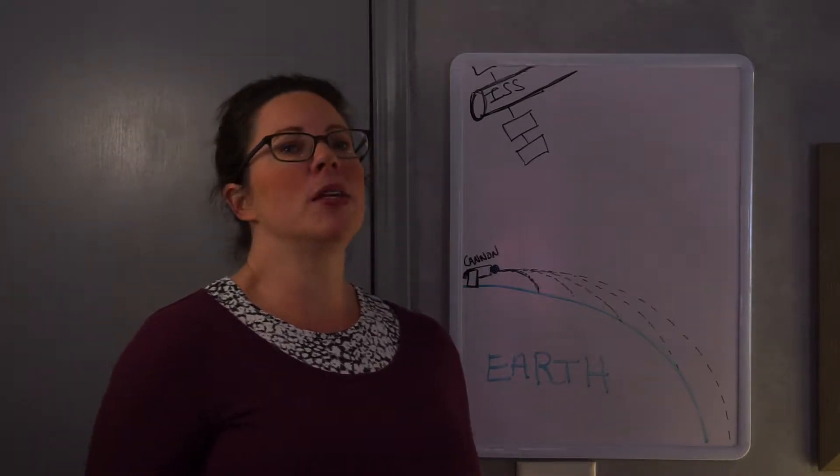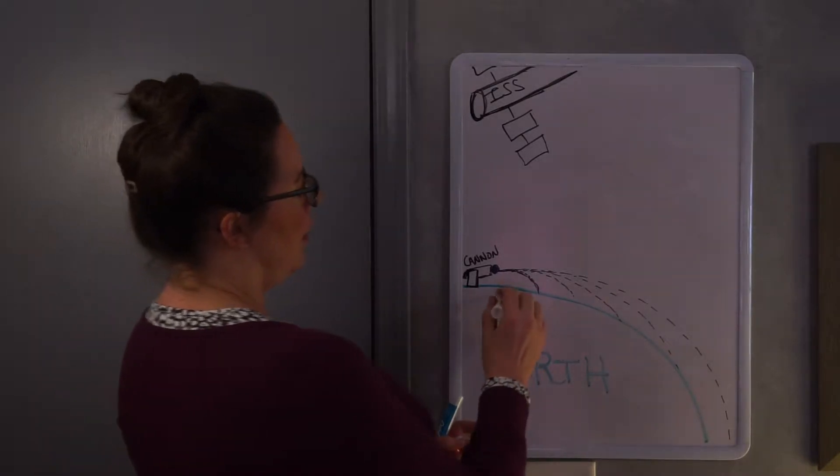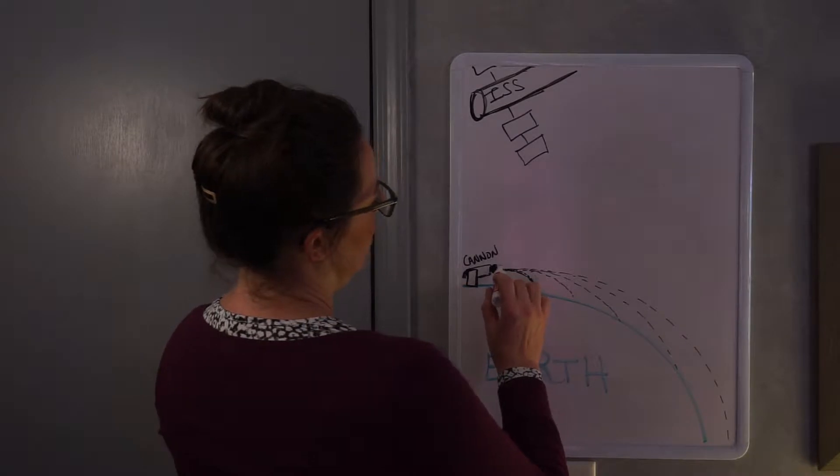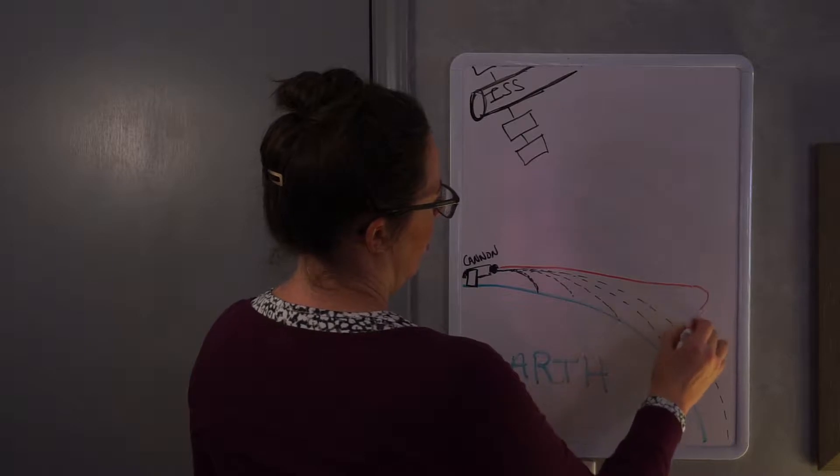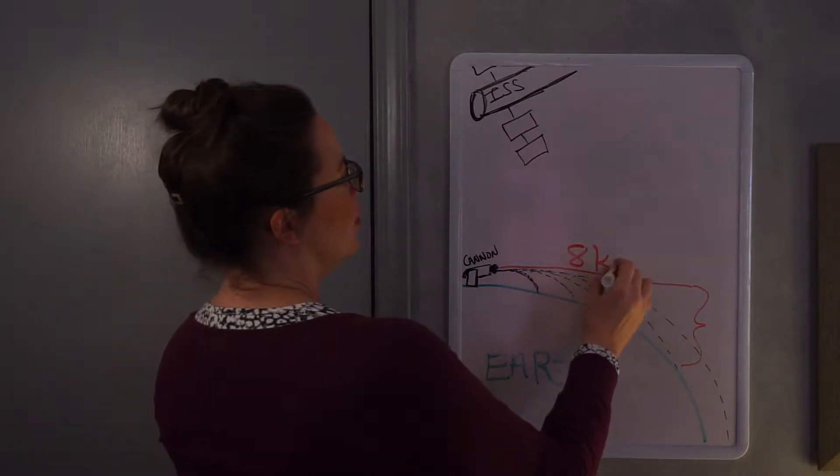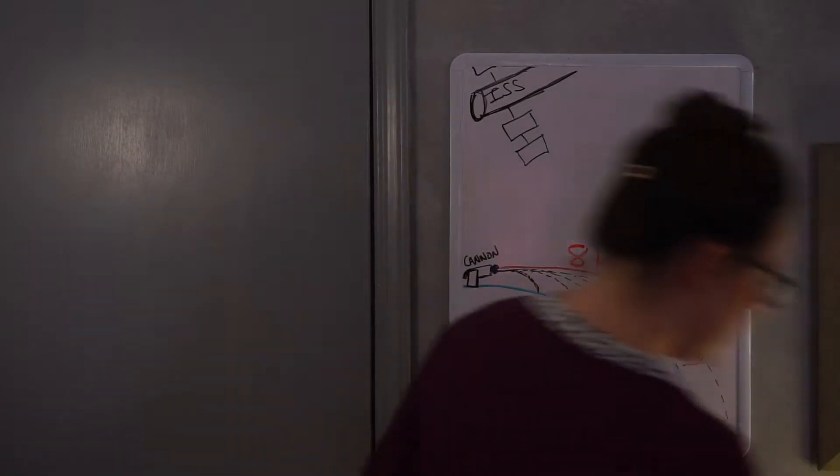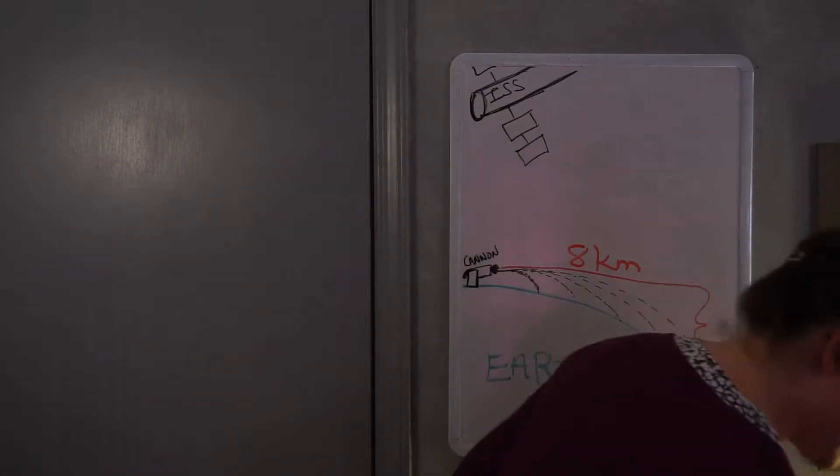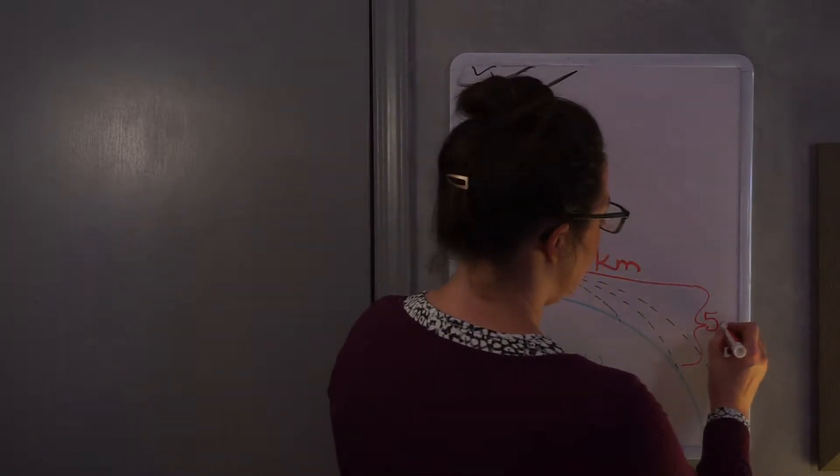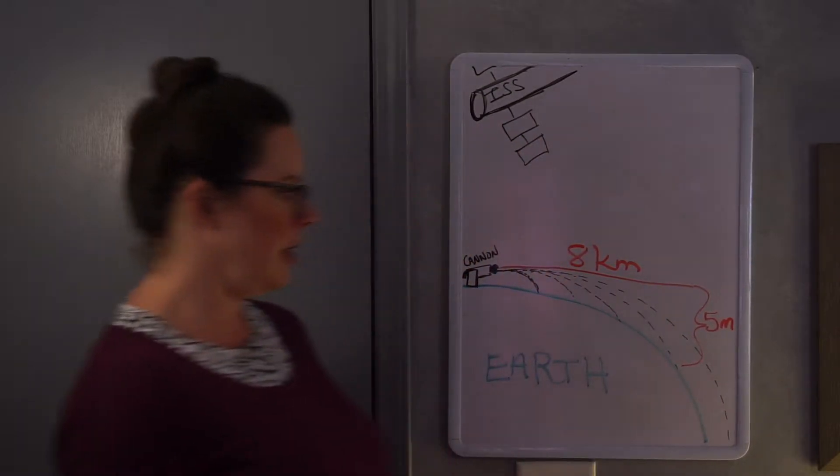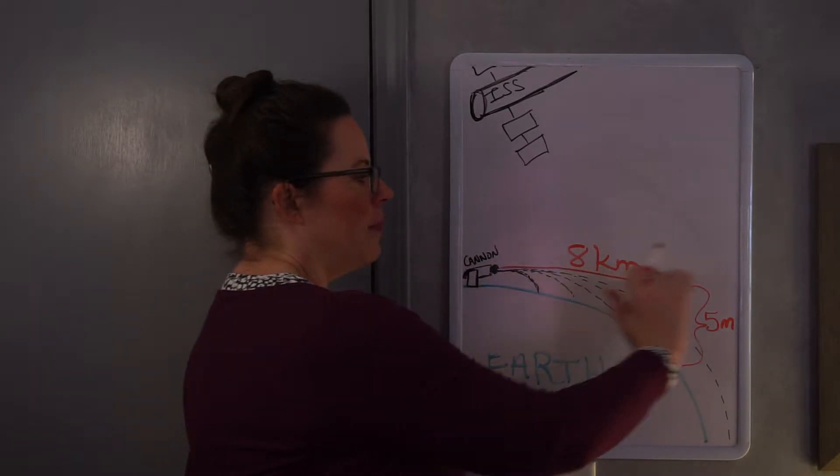Let's just say we shoot it a little bit further and a little bit further, and all of a sudden we start to see that the path that it takes matches the curvature of the earth. So that is what an object that's in orbit around a planet is doing. An object that's in orbit has traveled, I'm going to try to draw this, for every eight kilometers that you travel horizontally you drop down five meters vertically.